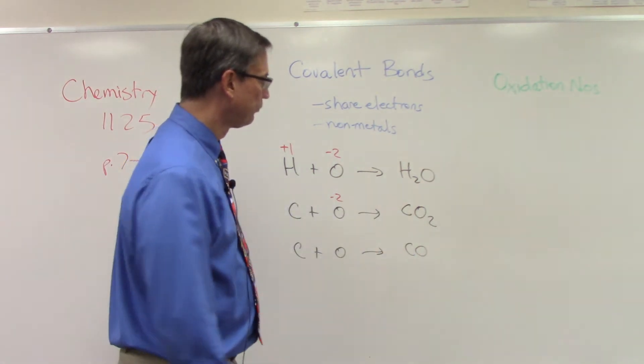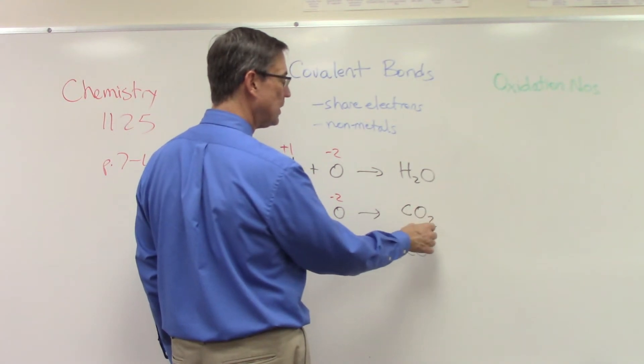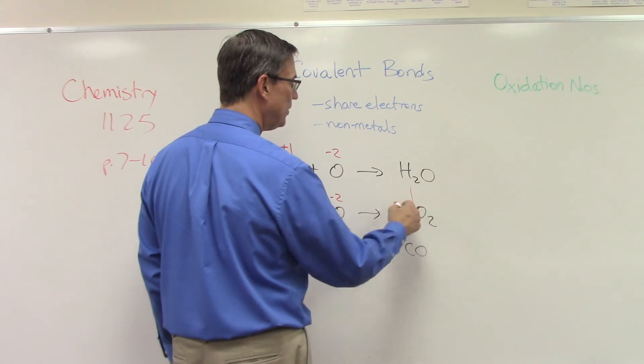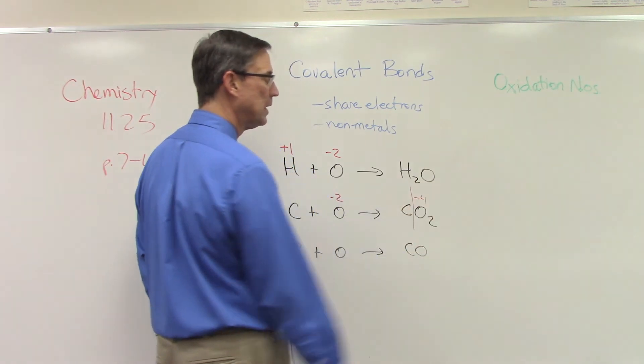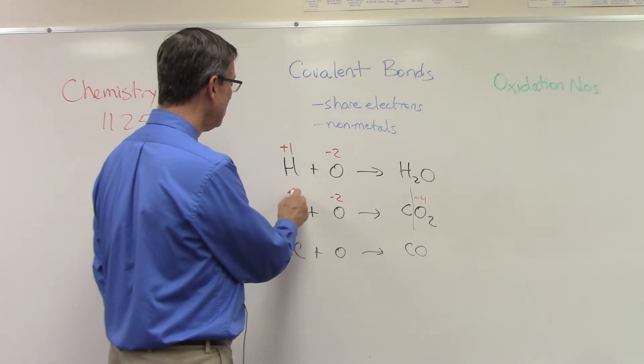So this tells me that the oxygen, since I have two atoms and each one is definitely negative two, then this side of the molecule has to be negative four. So that tells me that carbon must be positive four.